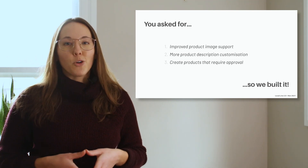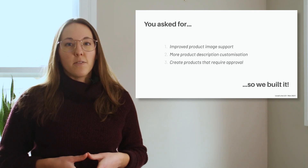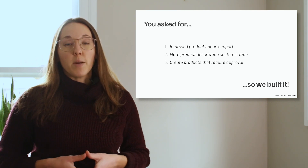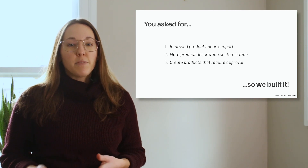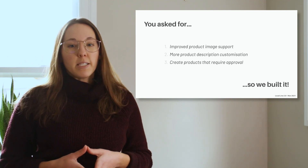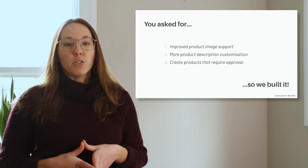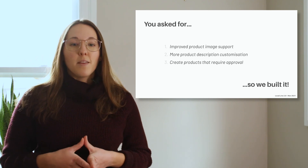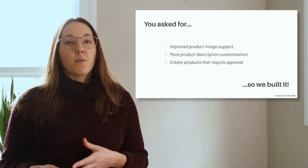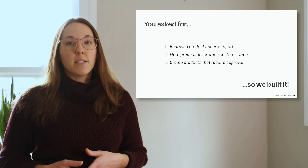You can also now create products that require an approval flow. This is really exciting for producers who sell variable-weighted products. The key aim of this flow is to delay final payment for a product — like those that need to be weighed before the final invoice amount is known. If the customer opts to pay by credit card at checkout, the payment is pre-authorized but not processed, and the card details are saved so you can process the final payment when the final weight is known.